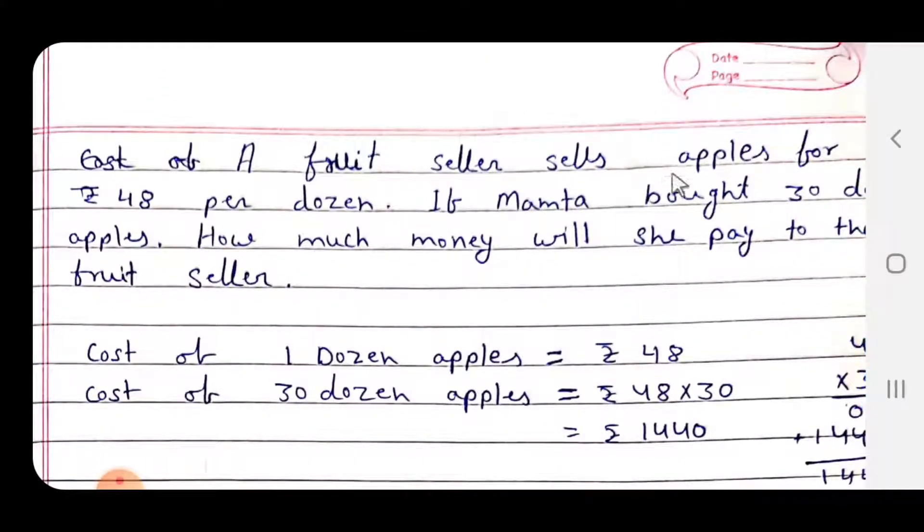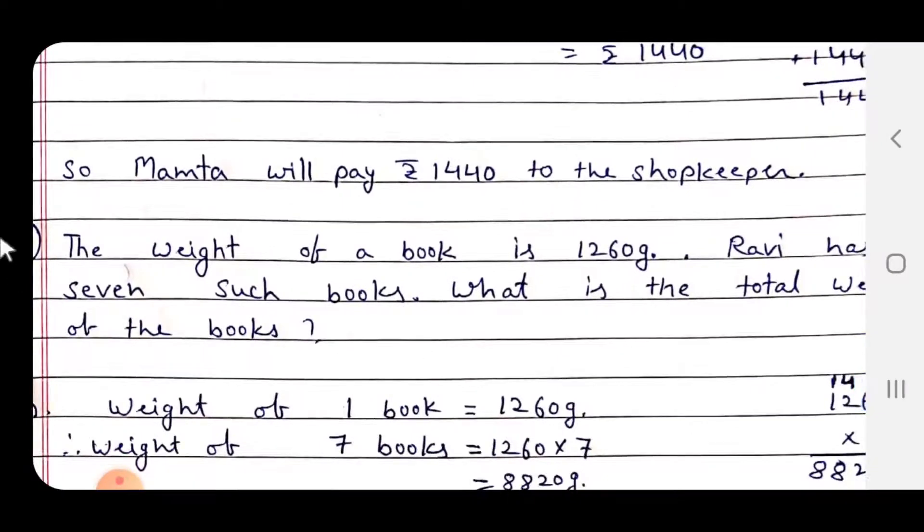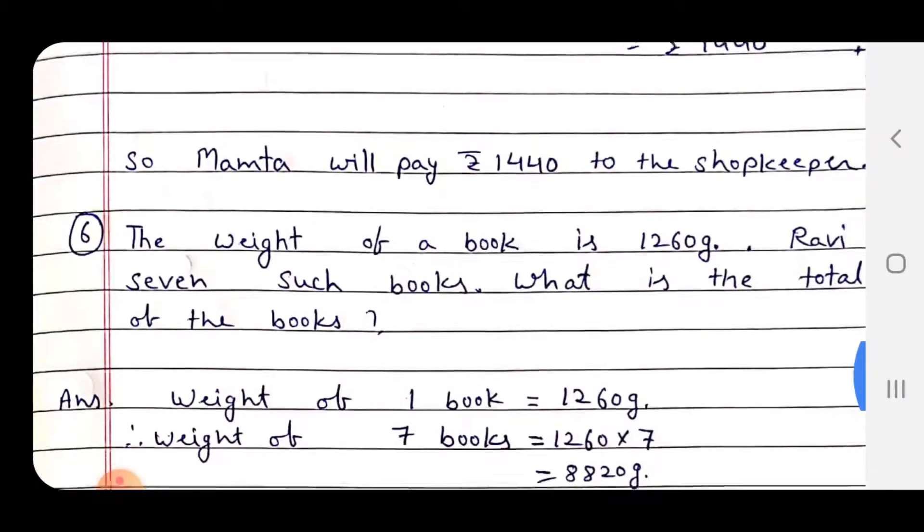If a fruit seller sells apples for 48 rupees per dozen, and Mamta bought 13 dozen apples, how much money will she pay to the fruit seller? Cost of 1 dozen: 48 rupees. Cost of 13 dozen: 48 multiplied by 13 = 1440 rupees. So Mamta will pay 1440 rupees to the shopkeeper.